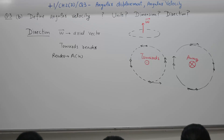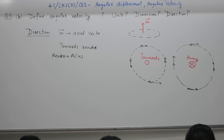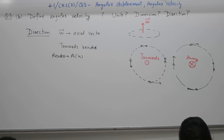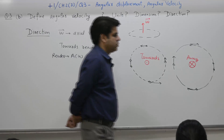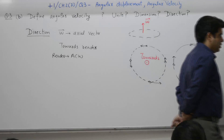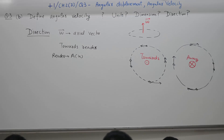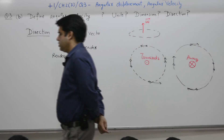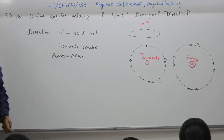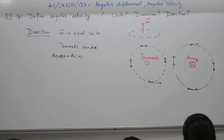In the first diagram, if the particle is moving anticlockwise, omega is towards the reader — not away. Omega is an axial vector. If the observer says the particle is moving anticlockwise, then omega is towards the reader.